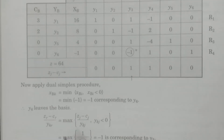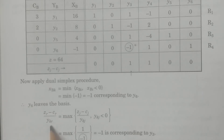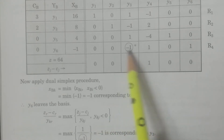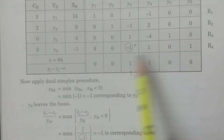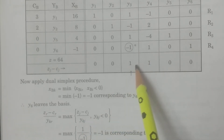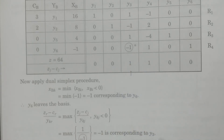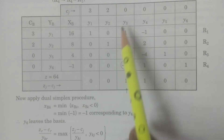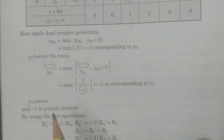Now calculate which vector enters the basis: ZR − CR divided by YKR = maximum of (ZJ − CJ) / YKJ for YKJ < 0. In the last row, the elements are 0, 0, −1, 1, 0, 1 — the only negative value is −1. Calculate (ZJ − CJ) / YKJ: it gives 1 / (−1) = −1. This corresponds to y3, therefore y3 enters the basis. The pivot element is −1.